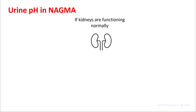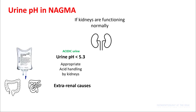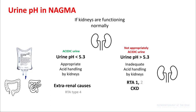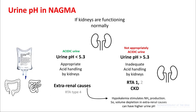Another thing you can look at is urine pH. If your kidneys are functioning normally in acidosis, you should be making acidic urine — that means your urine pH should be less than 5.3, indicating external causes for non-anion gap acidosis. RTA type 4 is the exceptional RTA which results in more acidic urine production. If your urine pH is more than 5.3, your kidneys are not handling your acid properly, as seen in CKD and RTA type 1 and 2. Note that hypokalemia stimulates ammonia production, so urine pH can sometimes rise in patients with volume depletion, meaning patients with GI losses can sometimes present with higher urine pH.